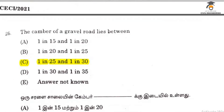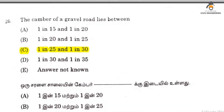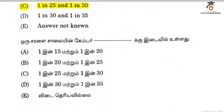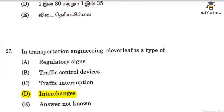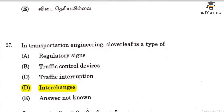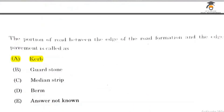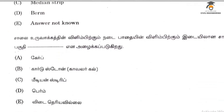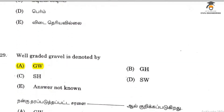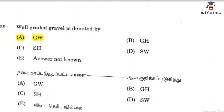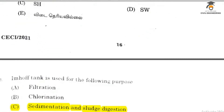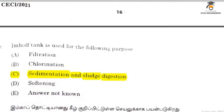The camber of a gravel road lies between 1 in 25 and 1 in 30. In transportation engineering, the clover-leaf type is one of the interchanges. The portion of the road between the edge of the road formation and the edge of the pavement is the curb. Well-graded gravel is classified as GW.